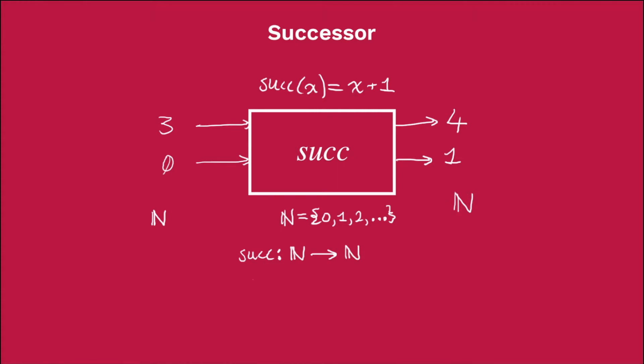So let's quickly just look at some examples of this in written form rather than in box form. So successor of 3 equals 4, successor of 5 equals 6, and so on. You get the idea.